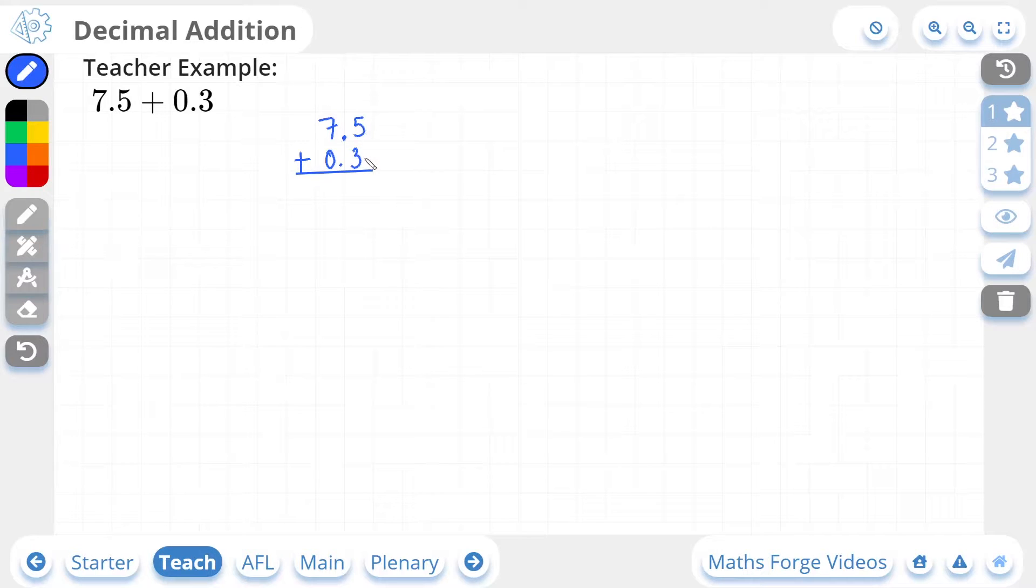So let's go ahead and do this. 5 plus 3 is 8. Then we have a decimal point. And then 7 plus 0 is 7. So 7.8 should be our final answer, and if we check our answer, there it is.